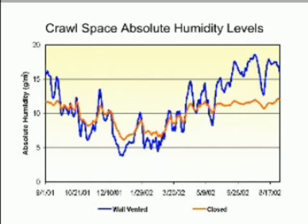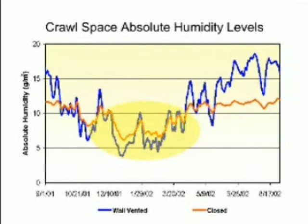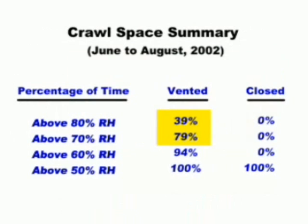This next graph shows what absolute humidity conditions were for an entire year in the field test. Absolute humidity is a measurement of how much water vapor is in the air. This graph reveals that during the winter, both the wall-vented and closed crawlspaces reached their driest conditions, and they ended up performing about equally well. Since winter results in drying conditions for both groups, crawlspace moisture control efforts really need to focus on the wetting effect that hot, humid weather has on wall-vented crawlspaces.